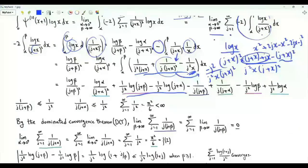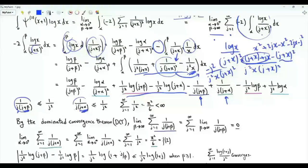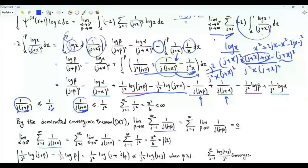We need to sum over positive integer j, then take the limits as beta tends to infinity and as alpha tends to 0 from above. Let's focus first on two of these terms. Note that 1 over j times (j+beta) or 1 over j times (j+alpha) are upper bounded by 1 over j squared. The upper bound is not a function of alpha or beta. Applying the sum over positive integers to the upper bound gives zeta(2) = pi squared over 6, which is finite.